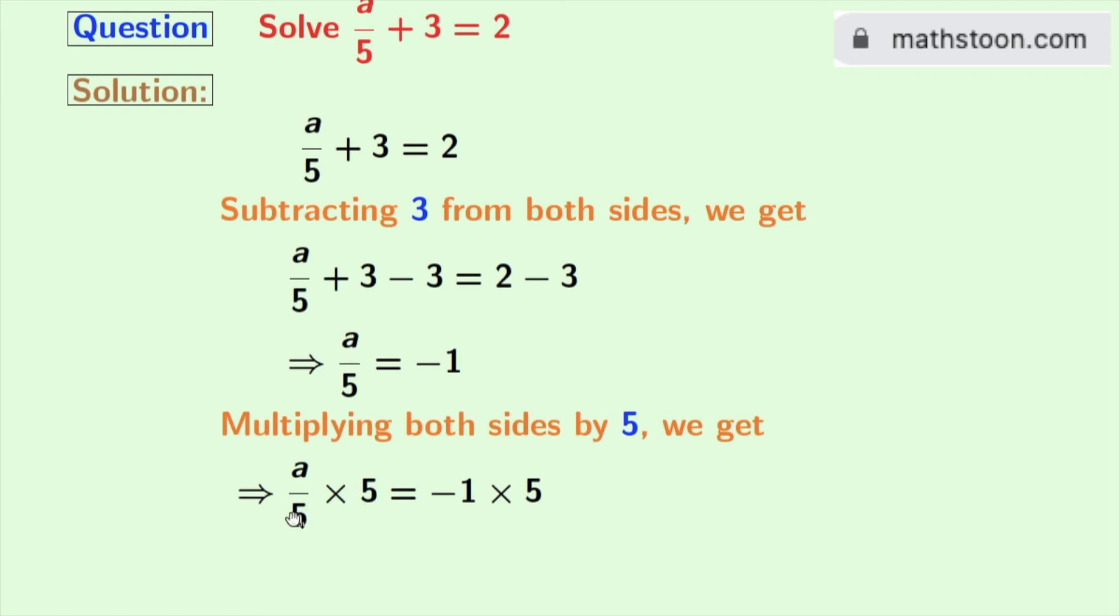As in the left hand side, 5 gets cancelled, we are left with a. And in the right hand side, we get minus 5. So, we get a is equal to minus 5 as our final answer.